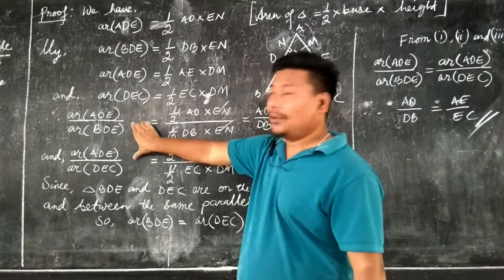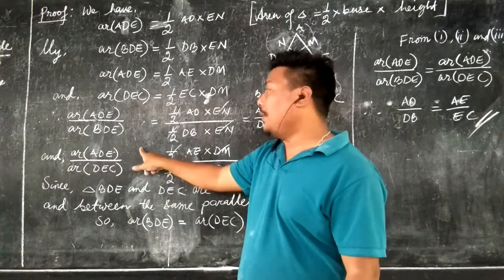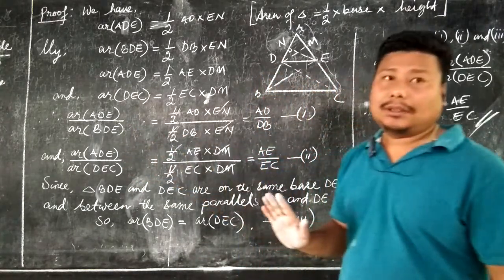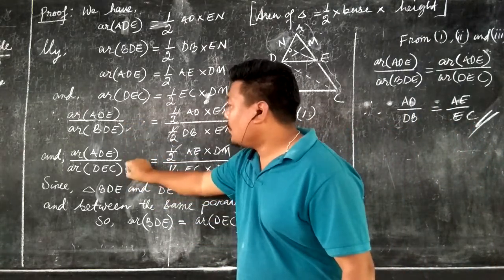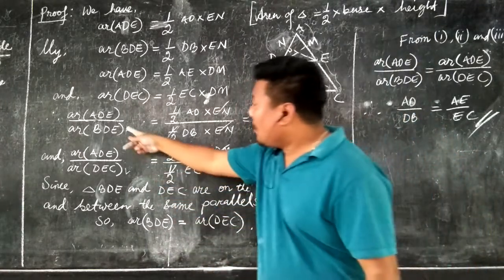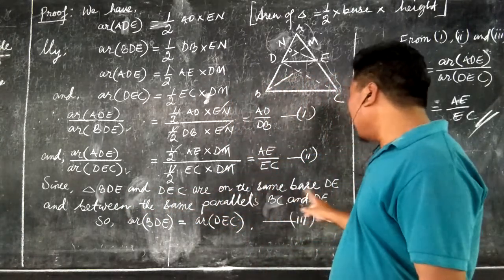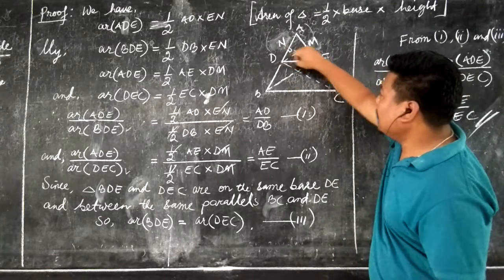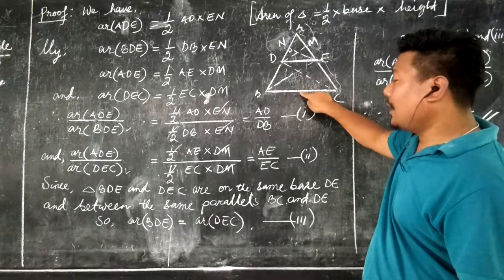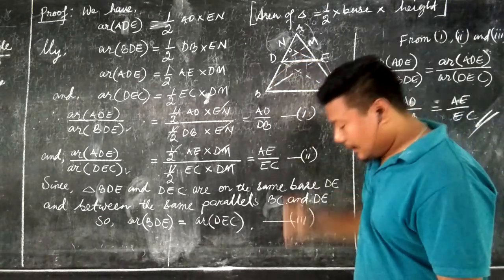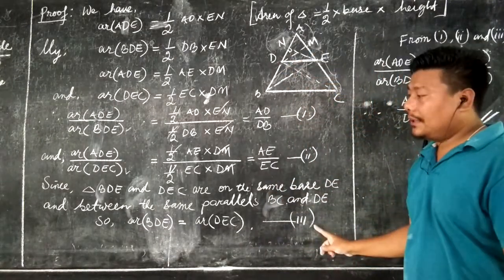Now in these two ratios, the numerator is area of triangle ADE in both cases, meaning the same triangle appears in both. Now let us compare area of triangle BDE and area of triangle DEC. These two triangles are lying on the same base DE and drawn between the same parallel lines DE and BC. That means the areas of these two triangles are equal. Let us mark this as Equation 3.